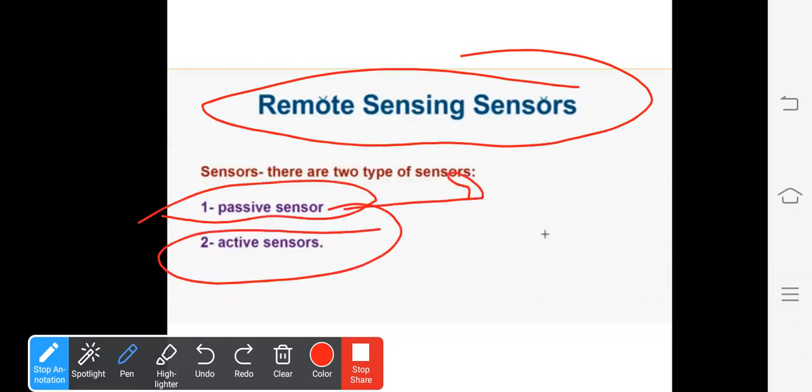Passive sensors need external energy sources. In the case of active sensors, there is no need for external energy sources. There is no need for sunlight. At night, we cannot capture photos with passive sensors.